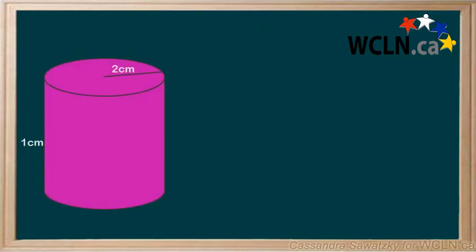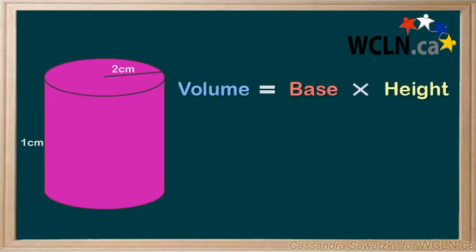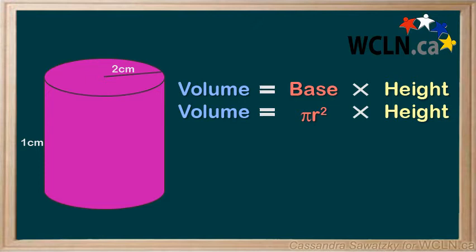Let's try one more example. This time, we'll find the volume of a cylinder, so it's a little bit more tricky. To find the surface area of a circle, we use the equation pi r squared. Then, we multiply by the height of the cylinder to get our volume equation.